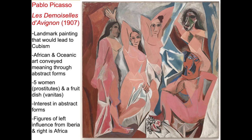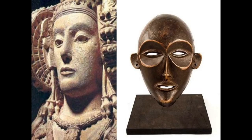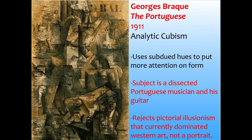Picasso's number one work is Les Demoiselles d'Avignon (The Ladies of Avignon) from 1907. It's a large work housed at the Met in New York City and is considered a foundational work of art history — the first truly Cubist work. It is influenced by African masks, visible on the two women on the far right. The five women depicted are prostitutes, all deconstructed in face and body. A fruit dish symbolizes vanitas from Dutch still lifes. Figures on the left reference Iberian art; those on the right show African influence.